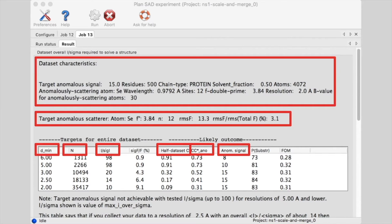The anomalous signal obtained, the probability that we will solve the structure with this data, and the expected figure of merit or quality of your SAD phased map.